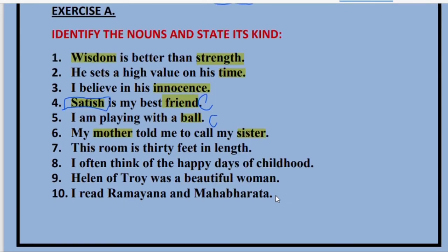Coming to sentence number seven: 'This room is 30 feet in length.' Room is a common noun, isn't it? And length is also another type of noun, but it is not a common noun — it is an abstract noun. We cannot touch the length of it.